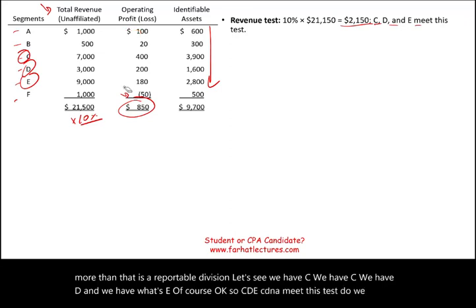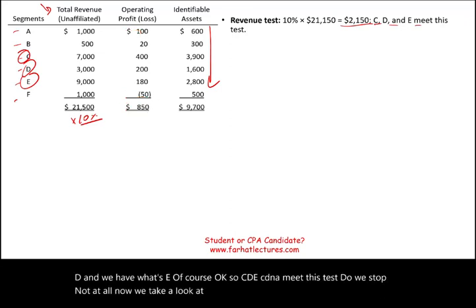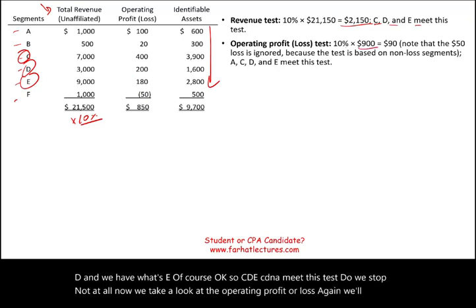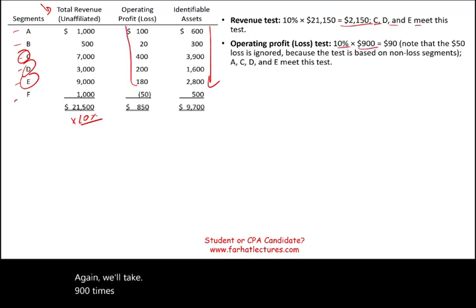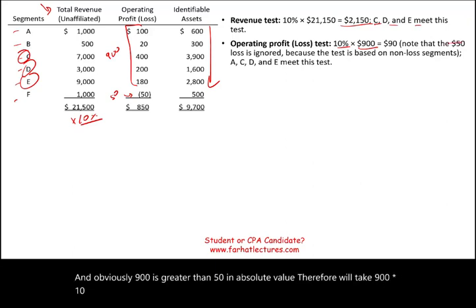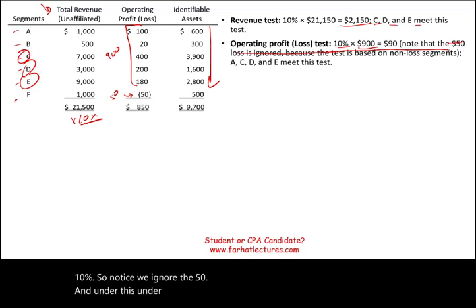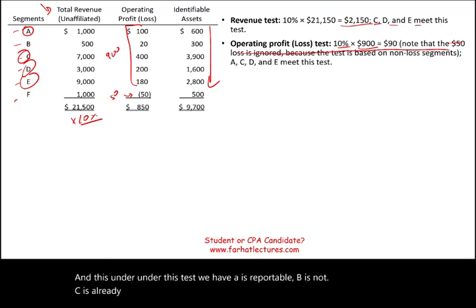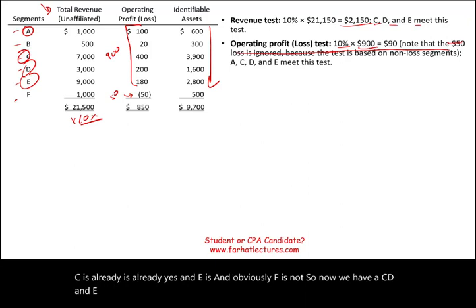Next we apply the operating profit or loss test. Total profits across profitable segments equal 900, and total losses equal 50. Since 900 is greater than 50 in absolute value, we multiply 900 by 10% — our threshold is 90. Under this test, segment A is reportable; B is not; C, D, and E were already reportable; and F is not. So now segments A, C, D, and E are reportable.